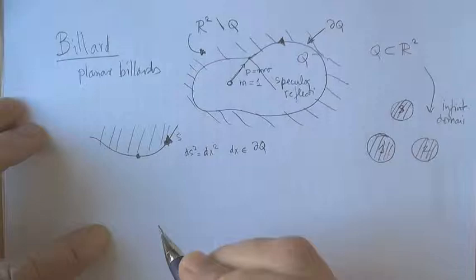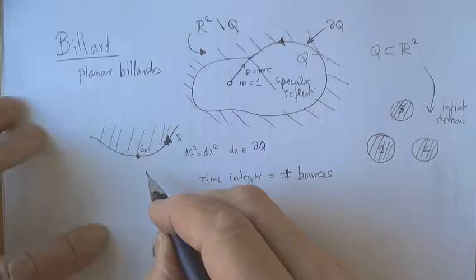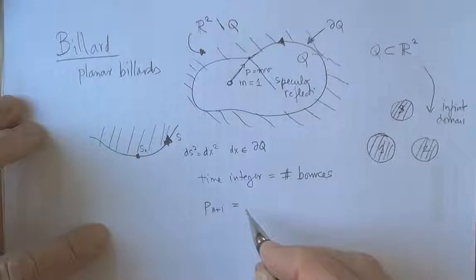To blow this up a little bit, here is the wall of the billiard. We'll parameterize the length of the wall in clockwise direction by parameter s. This is just curvilinear distance. So here we are, we hit it at n time.